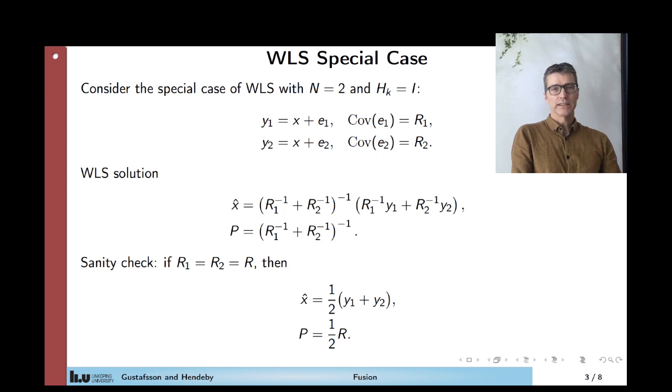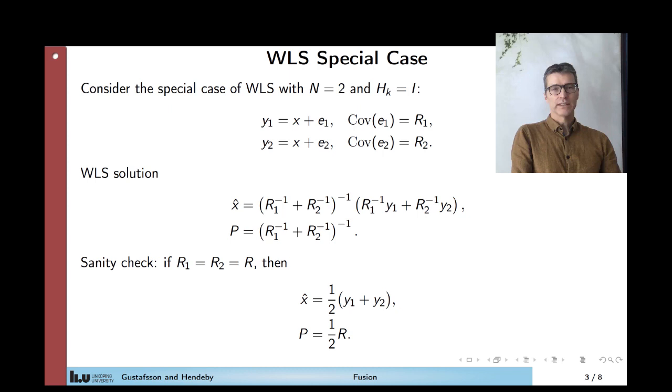Let's look at a special case. So suppose that you have only two measurements, and that the H_k is equal to the identity matrix.